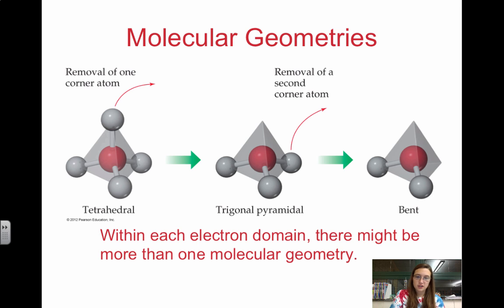Within each electron domain, there is usually more than one molecular geometry. We're going to start with tetrahedral. We can take one of the atoms away, we get trigonal pyramidal. We take another atom away, it's bent. Notice that from tetrahedral we can actually derive different shapes, and we're going to focus on this in class.